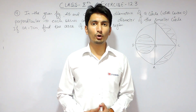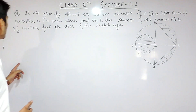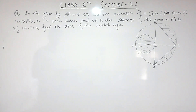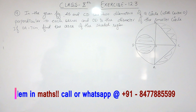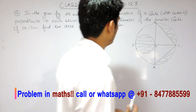Hello everyone, we are from True Maths and in this video we are going to solve question number 9 of exercise 12.3. The question says: in the given figure, AB and CD are two diameters of a circle with centre O perpendicular to each other, and OD is the diameter of the smaller circle. If OA is 7cm, you have to find the area of the shaded region.